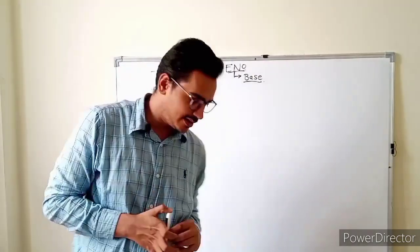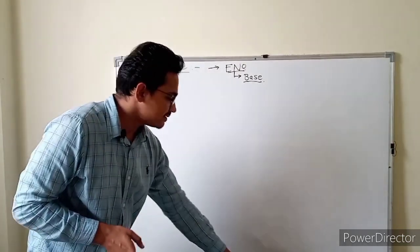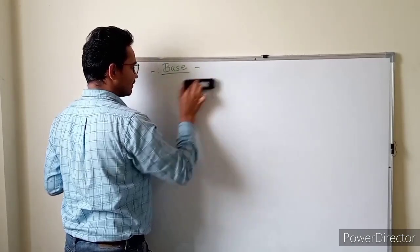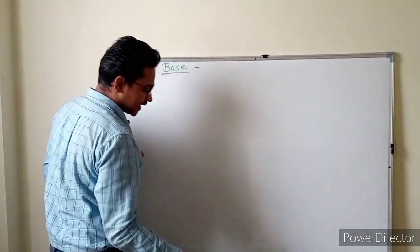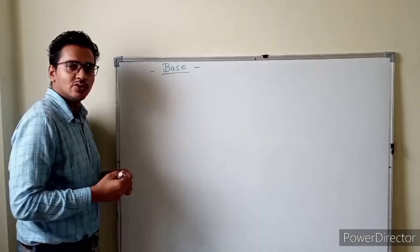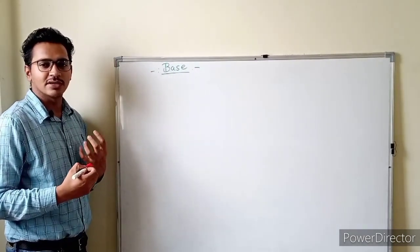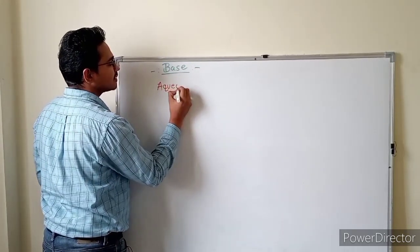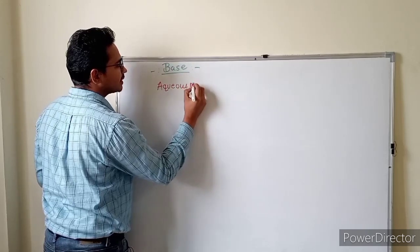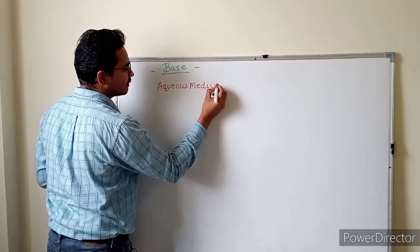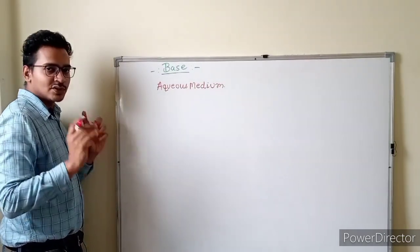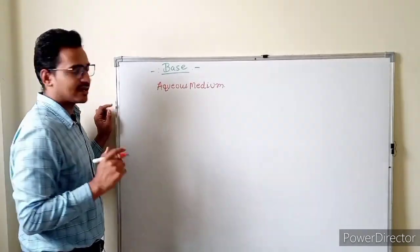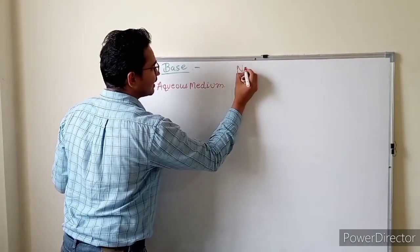Now let's start with what Arrhenius gave as his theory for base. For acid he said that when dissolved in water it releases hydronium ions. Similarly here, aqueous medium is important. In aqueous medium it will work. Let's take the example of NaOH — sodium hydroxide — which you know is a base.